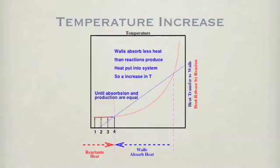Starting at temperature 1, it increases toward temperature 4, the wall temperature. When it reaches the wall temperature, then there is a balance between production and absorption, so the temperature is constant.